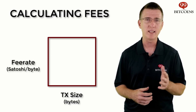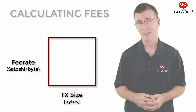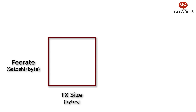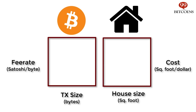Let's explain with an example from a different market. When shopping for a home or an apartment, the price of the home is calculated in terms of cost per square foot. While the apartment's price is comparable to the total transaction fee you pay, in order to measure the apartment's value, you need to calculate how much you would need to pay per square foot. Fee rate is bitcoin's cost per square foot.